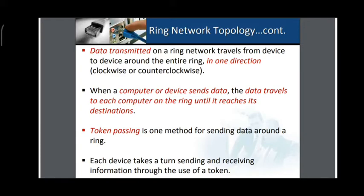When a computer or device sends data, it travels to each computer on the ring until it reaches its destination. Token passing is when people are given tokens — for example, when you are in a queue, you are given tokens. The first one who comes gets the first token, so they will be served first, followed by the next one, then the third one.